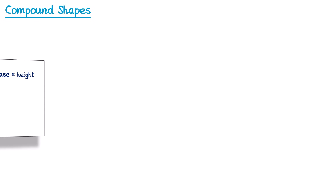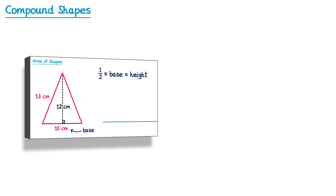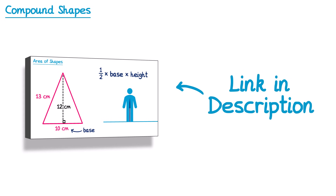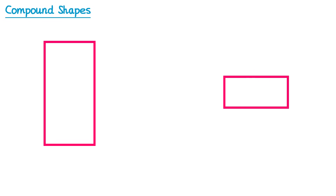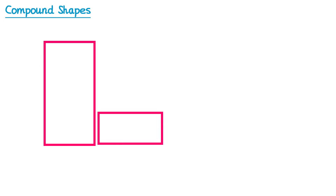Before you watch this video, I would highly recommend you check out my video on area of shapes if you haven't already done so. I'll put a link to that video in this video's description. In this video we're looking at compound shapes. If you take two shapes and join them together to make a larger shape, we call this a compound shape.